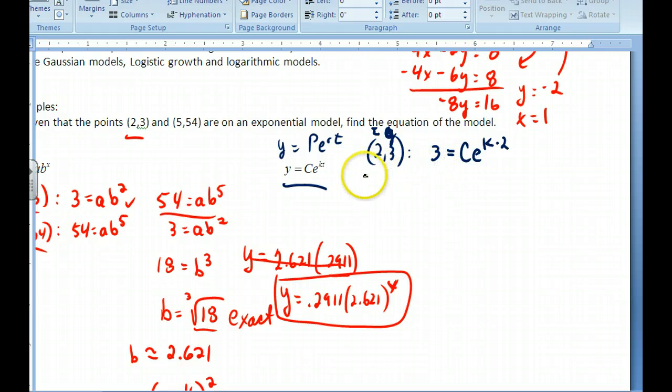Then I would also get the other equation, which is (5, 54). 54 = Ce^(k times 5). That's all in the exponent. I do exactly as what I did before. I can divide both these equations. I'm going to divide them in this form. So if I divide these, 3 divided by 54, that's 1 over 18. If I divide C divided by C, that's going to cancel out. The bases are the same, so I'm going to subtract the exponents. I'm going to get e^(-3k).